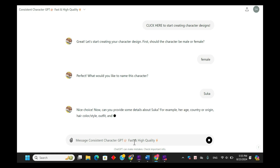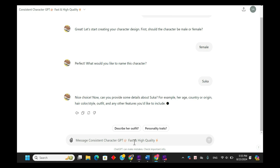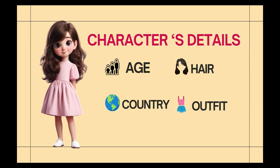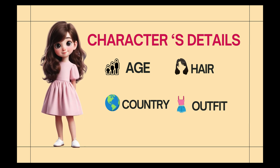After naming your character, the next step is to describe their details — this is crucial for maintaining consistency. On the screen, we have the character's details clearly outlined: age, country, hair, and outfit. These four aspects are key to keeping your character's appearance consistent. Providing specific and clear details not only helps the AI create a consistent character, but also ensures you have a strong visual reference as you continue your story.